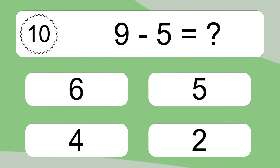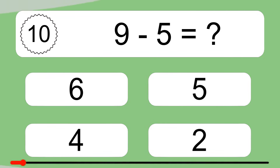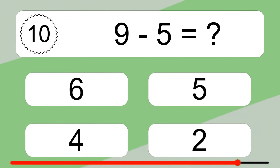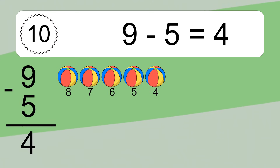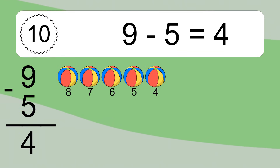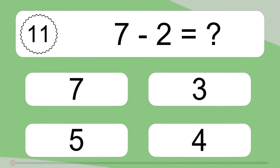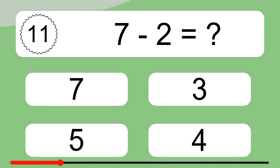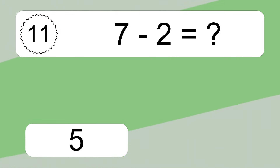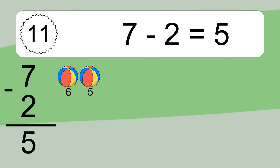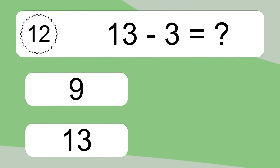9 minus 5 equals what? 9 minus 5 equals 4. Let's count it: 8, 7, 6, 5, 4. 7 minus 2 equals what? 7 minus 2 equals 5. Let's count it: 6, 5.